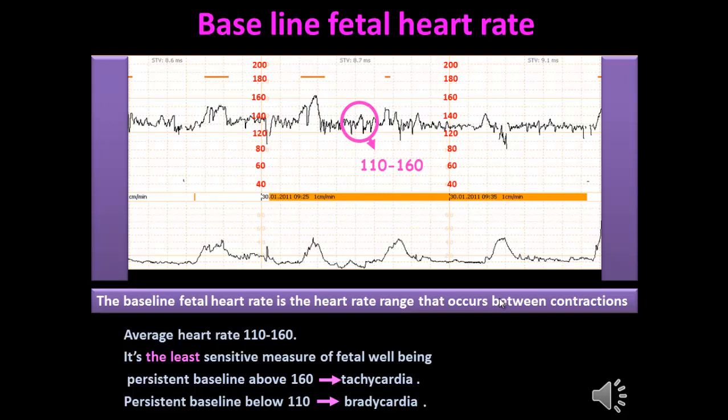The average heart rate is between 110 and 160 beats per minute. It is the least sensitive measure of fetal well-being. A baseline above 160 is called tachycardia, whereas a baseline below 110 is called bradycardia.